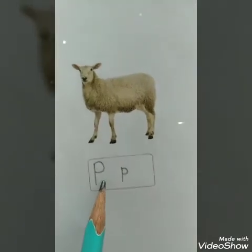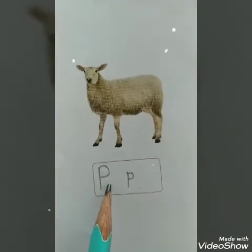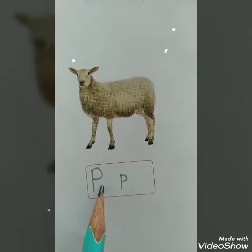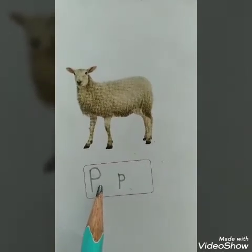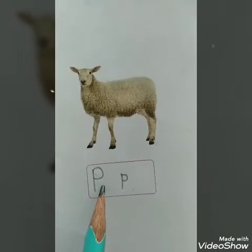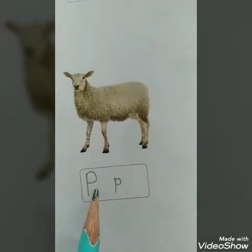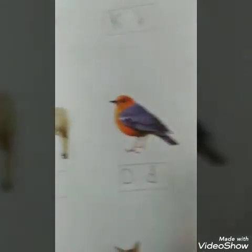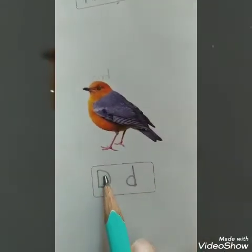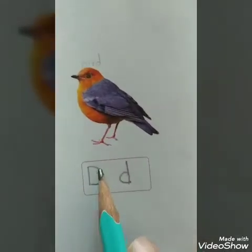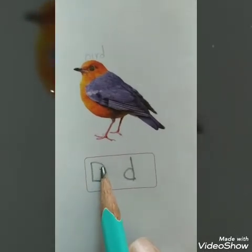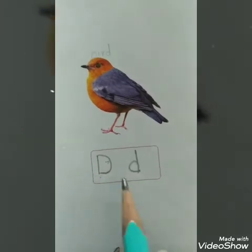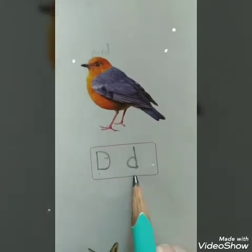What is this? SHIP. Last letter of the sound is P. Write here — Capital P and small p. What is this? BIRD — D. Last letter D. Capital D and small d.